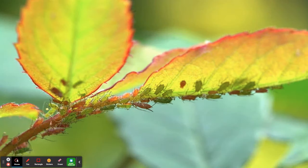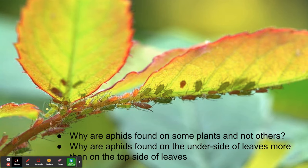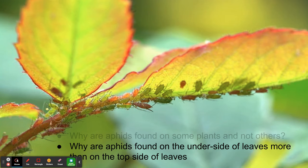Let's say a student is looking at a leaf and notices some aphids. They might ask, why are aphids found on some plants and not on others? Or why are aphids found on the underside of the leaves more frequently than on the top side? Each of these is a phenomenon or a sub-phenomenon. The presence of aphids on leaves is a phenomenon, and their apparent preference for the lower leaf surface is yet another phenomenon.